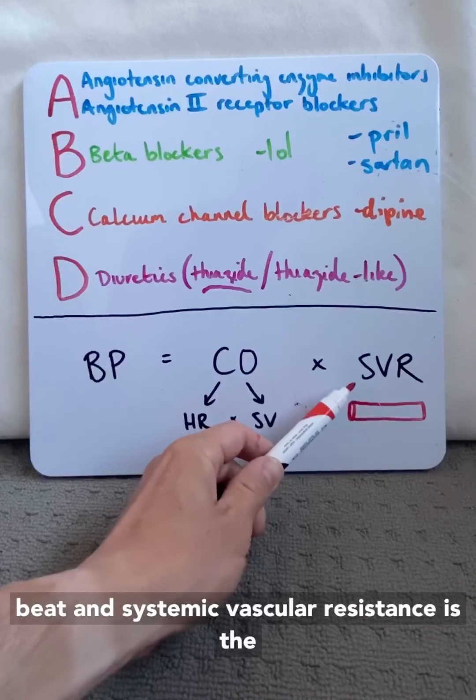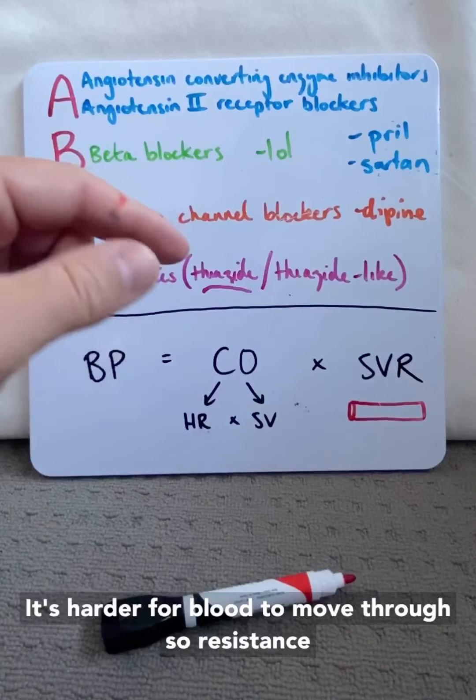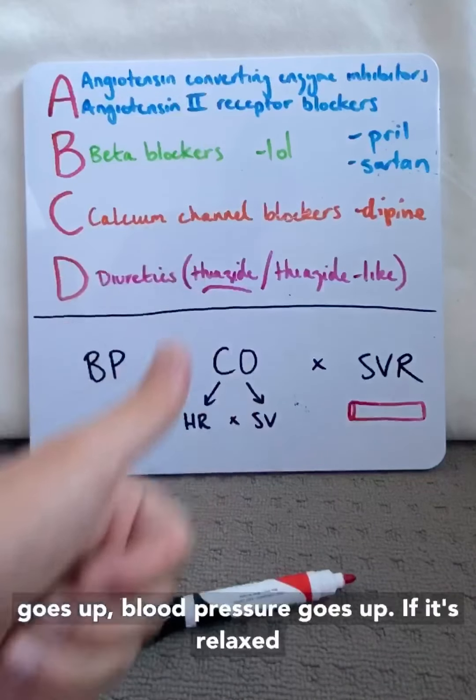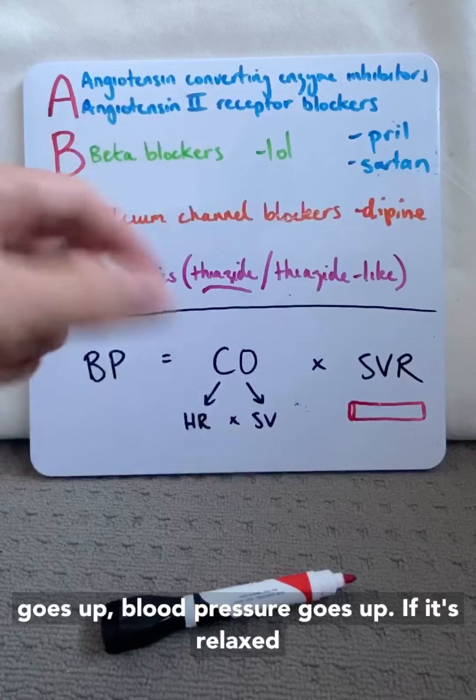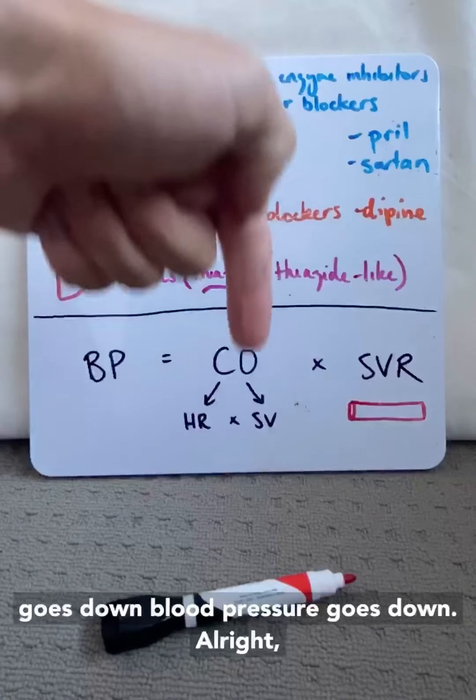And systemic vascular resistance is the diameter of the blood vessel. If it's narrow, it's harder for blood to move through. So resistance goes up, blood pressure goes up. If it's relaxed, it's easier for blood to move through. Resistance goes down, blood pressure goes down.